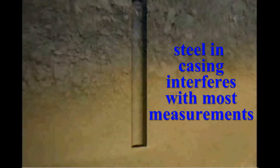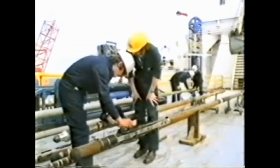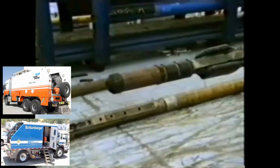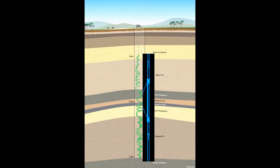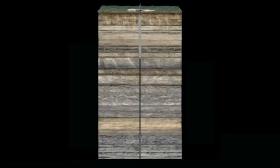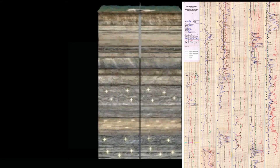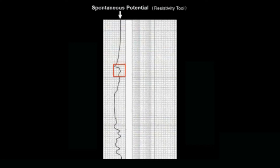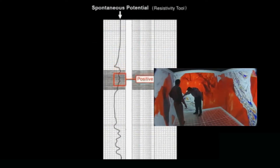Because steel encasing interferes with most of the measurements, open hole logs are performed before the hole is cased. Using some of the most advanced oil field technology developed by international service companies like Schlumberger, Baker Hughes, and Weatherford, these logs allow the site geologist and petroleum engineer to virtually see inside the well. Capturing electrical, acoustic, or radioactive signals that are emitted naturally or induced by emissions, logging tools measure the characteristics of the formation. Professional log analysts and petrophysicists interpret these logs.